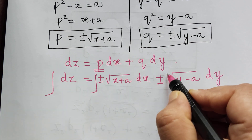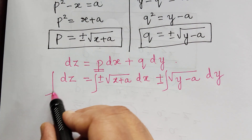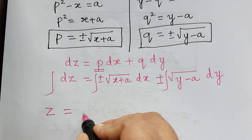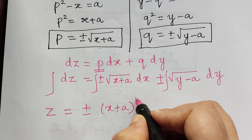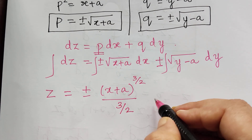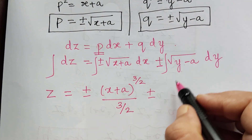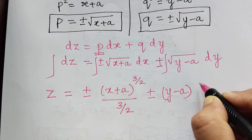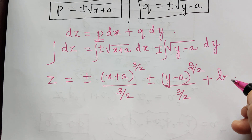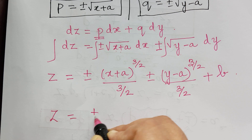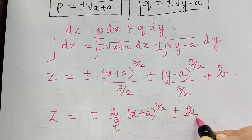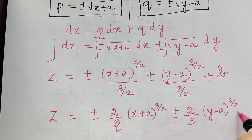Now we have to integrate on both sides. When we integrate, integral dz is z, which is equal to plus or minus x plus a to the power 1/2 plus 1, which is 3/2 after integration, divided by 3/2, plus or minus y minus a to the power 3/2 divided by 3/2, plus a constant of integration b.